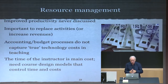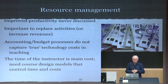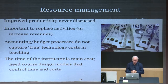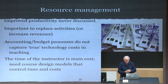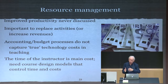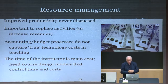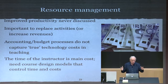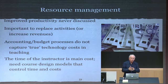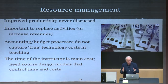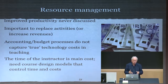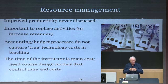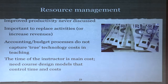Improved productivity is never discussed. It's important to replace activities if you're going to increase the use of learning technologies — that's what hybrid learning is all about. You're replacing some face-to-face teaching to free up faculty time to do the online stuff. Or you increase revenues through fully cost-recoverable master's programs for new markets. The time of the instructor is the main cost — 80% of most university budgets are paying the teachers. So you need course design models that control the time and costs. We should be able to design hybrid or fully online learning so it's less or the same work for faculty and students as a face-to-face class.